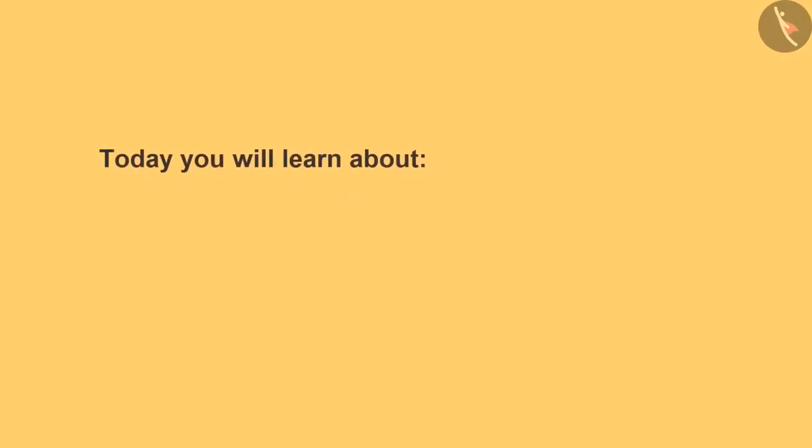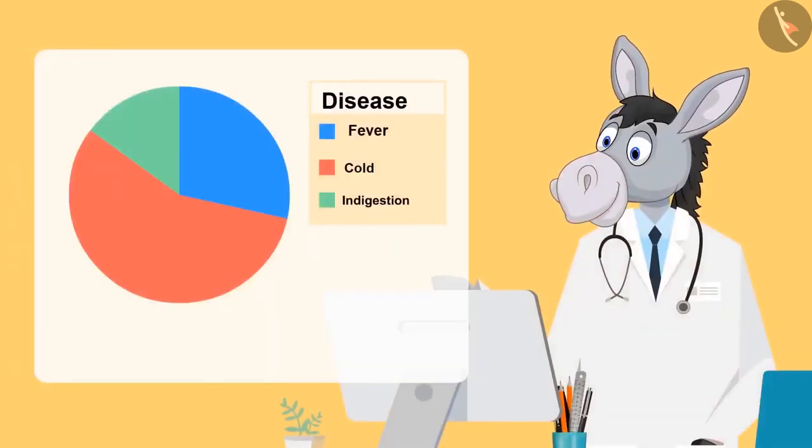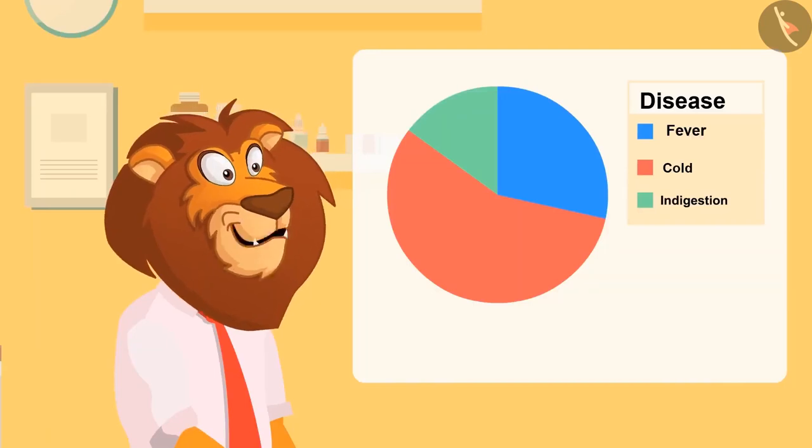Today you will learn about what is a pie chart and how to find data from a pie chart. So kids, this round-shaped chart you are looking at is known as pie chart. Is it because it is round like a pie?